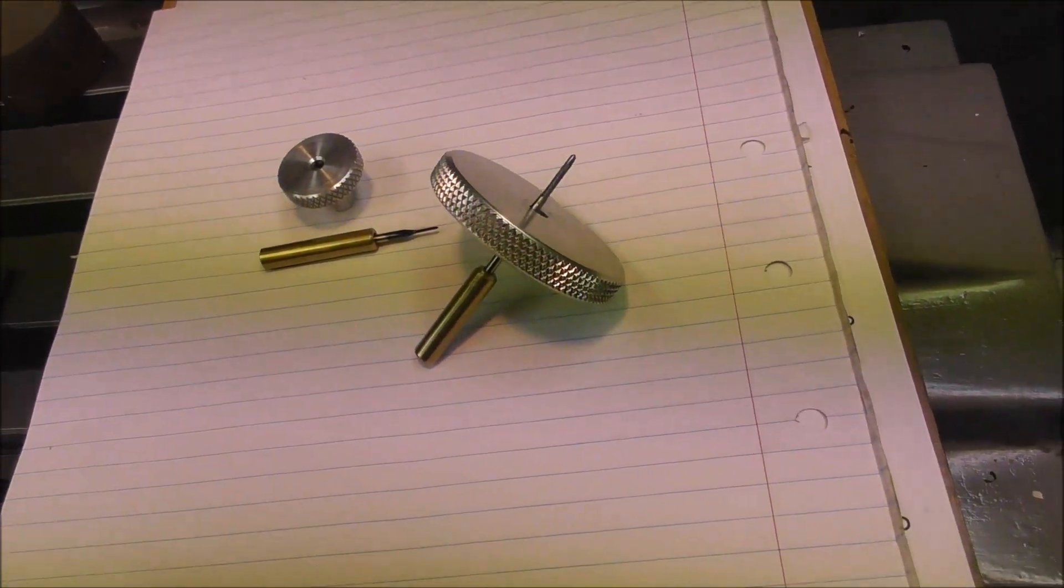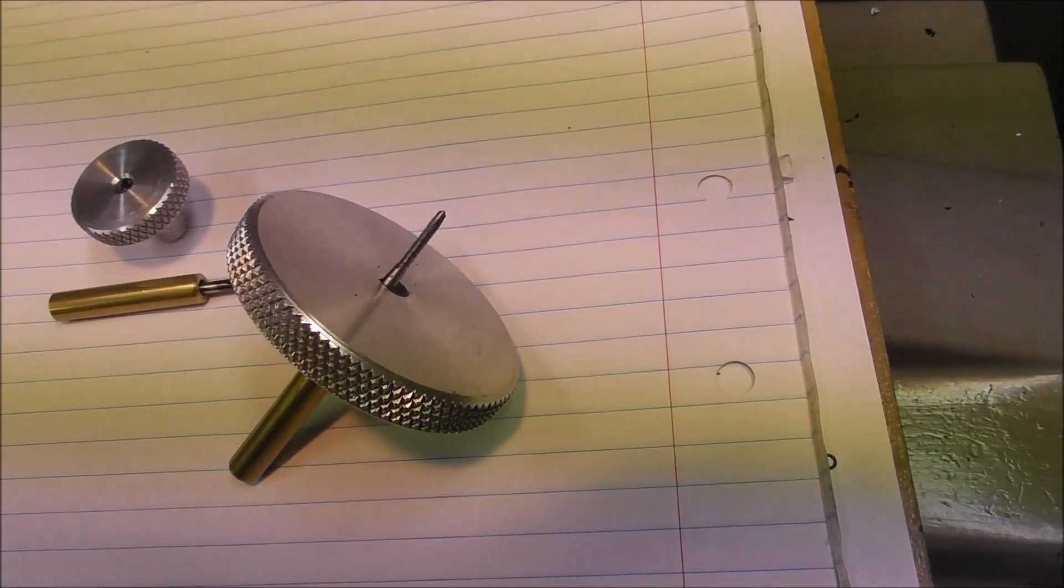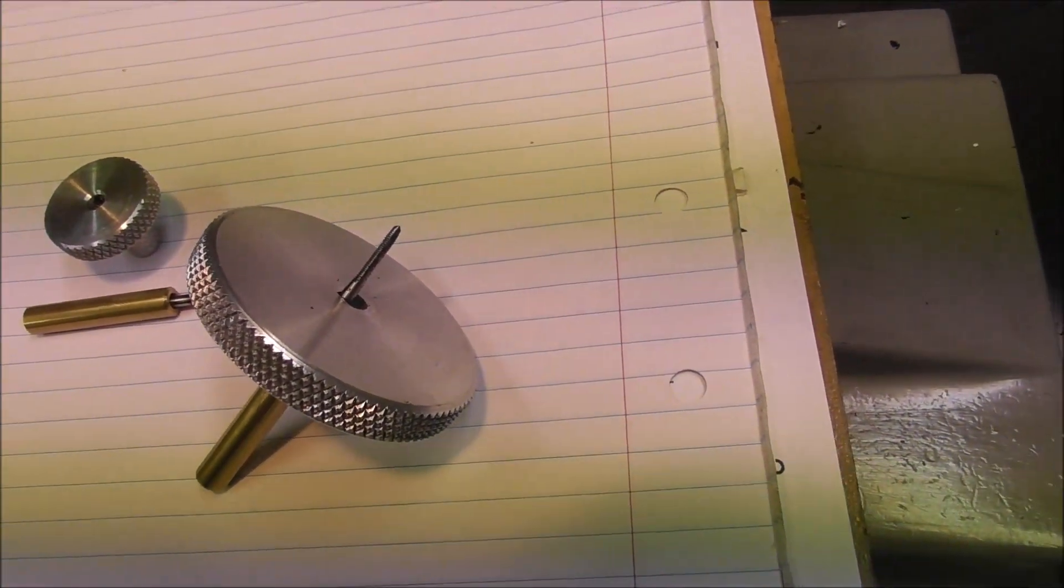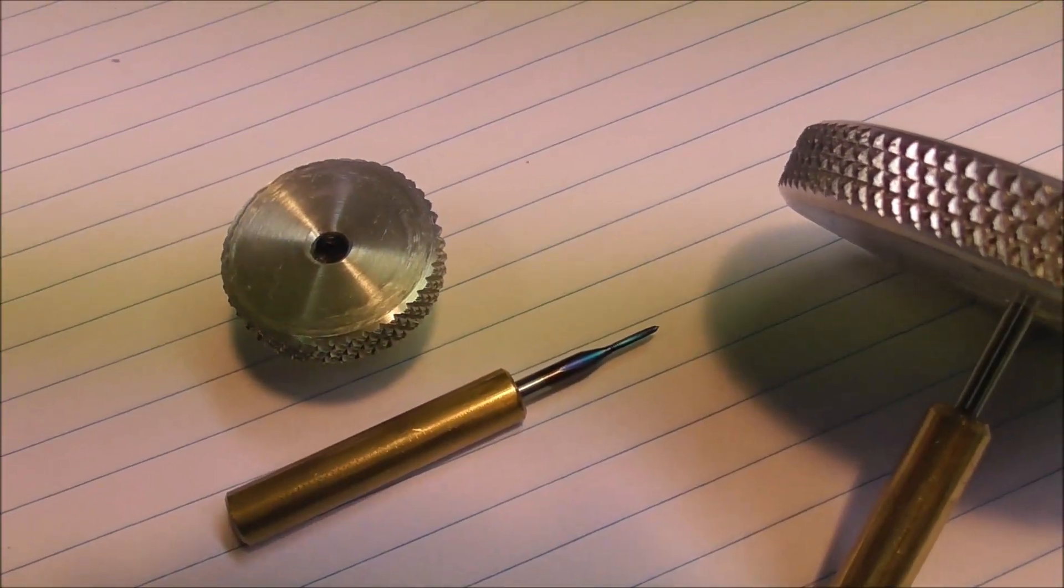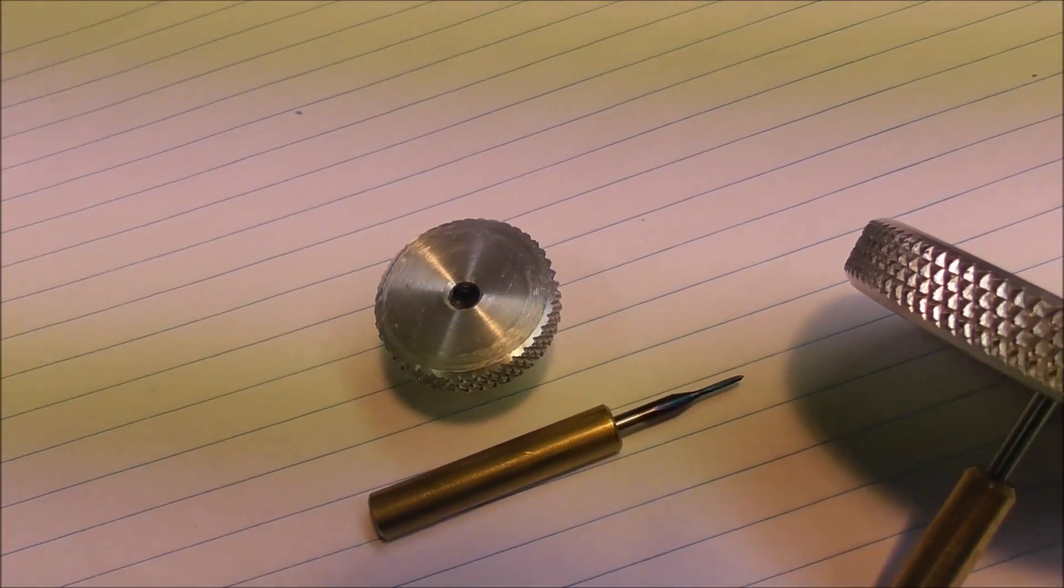I'll just show it to you in application. This is a two millimeter example, an M2, and this is a one millimeter example, an M1, with a much smaller tap wrench.